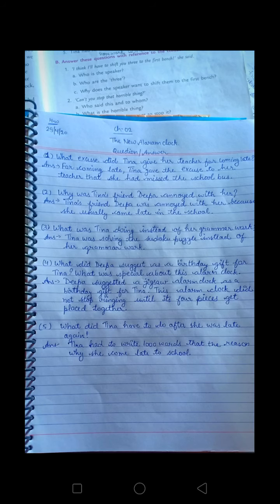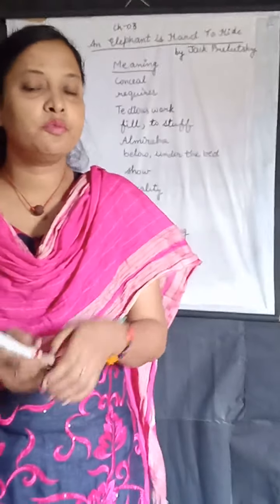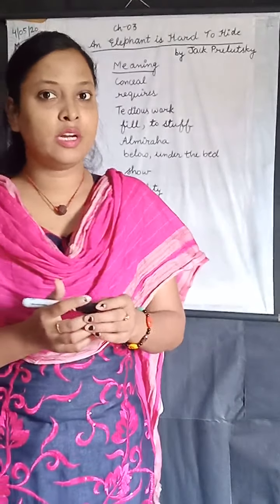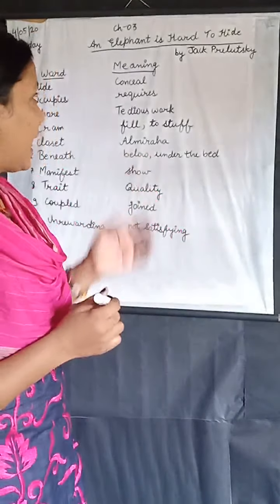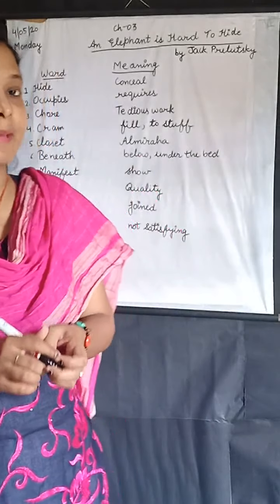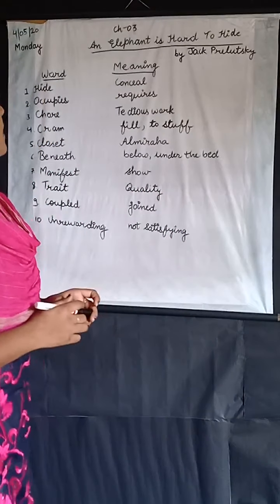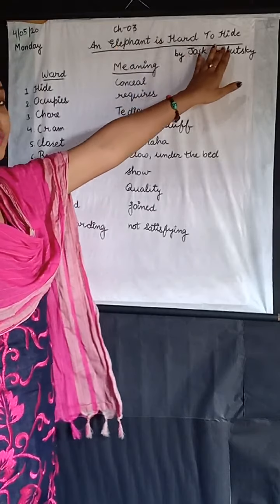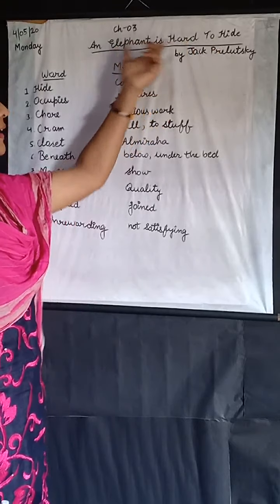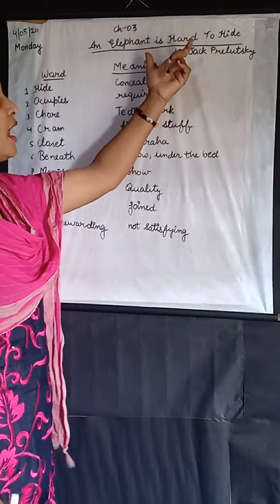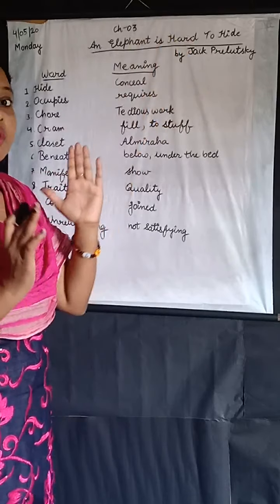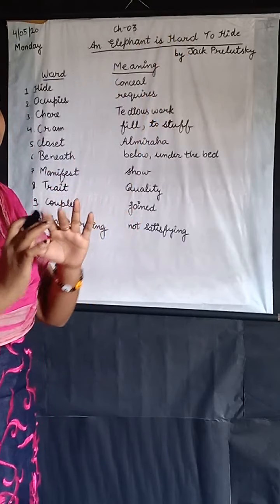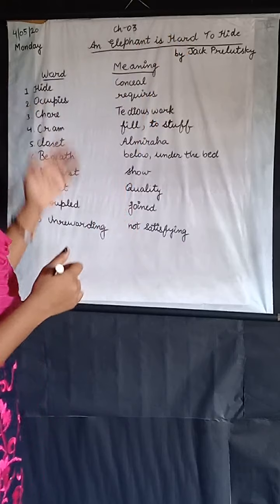Now we will start a new chapter: An Elephant is Hard to Hide. Students, before we start this chapter, we have to look at the word meanings in the given chapter. This chapter is all about an elephant. An elephant is hard to hide — ek haathi ko chhupana bahut mushkil hai — we all know, because of its big size.